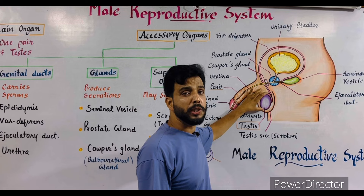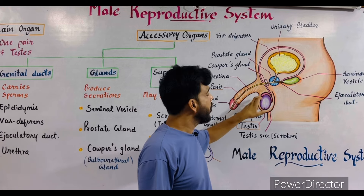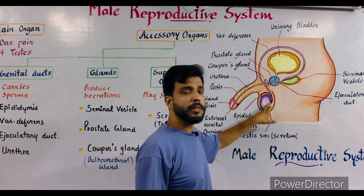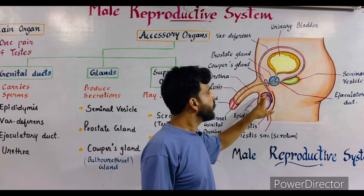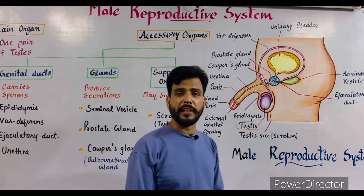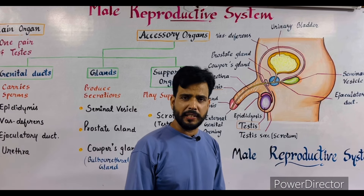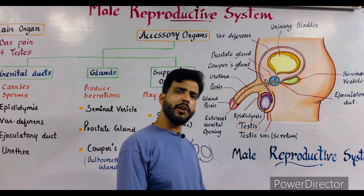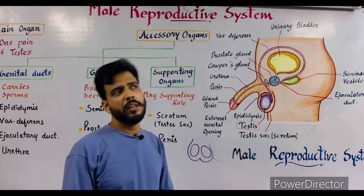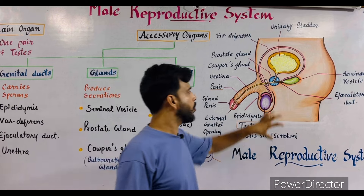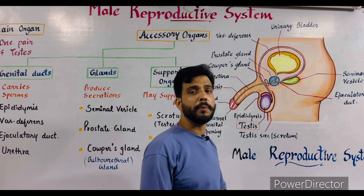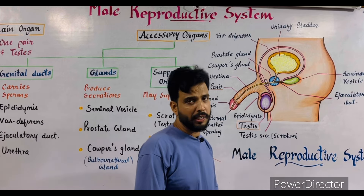Each testis is about 3 to 5 centimeters long, 2 to 3 centimeters broad, and weighs about 14 to 15 grams. The color of the testes is pinkish white.